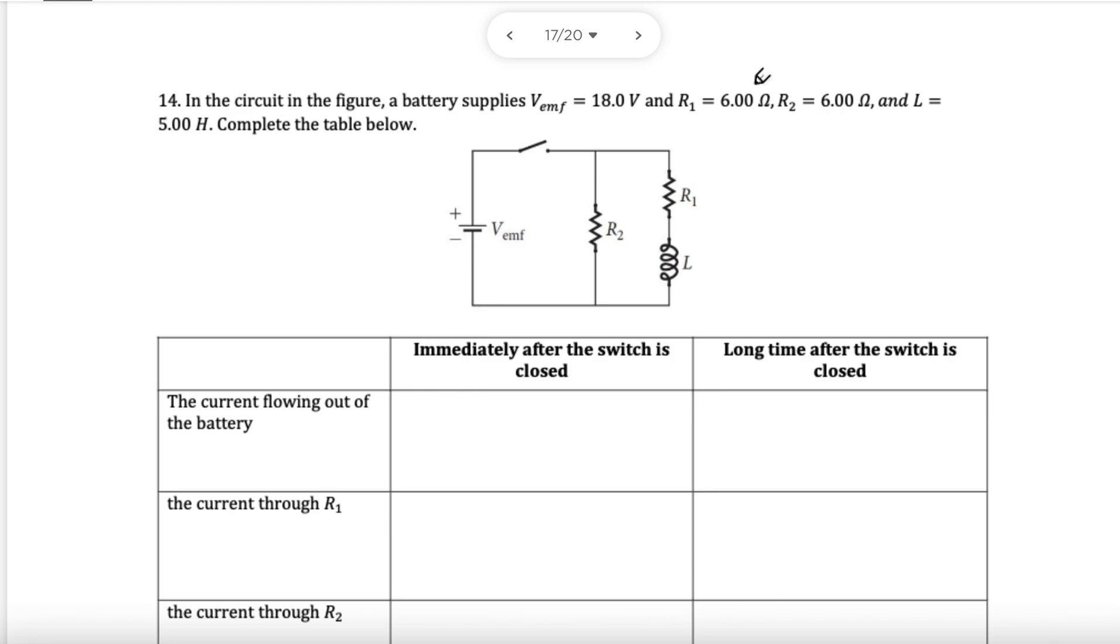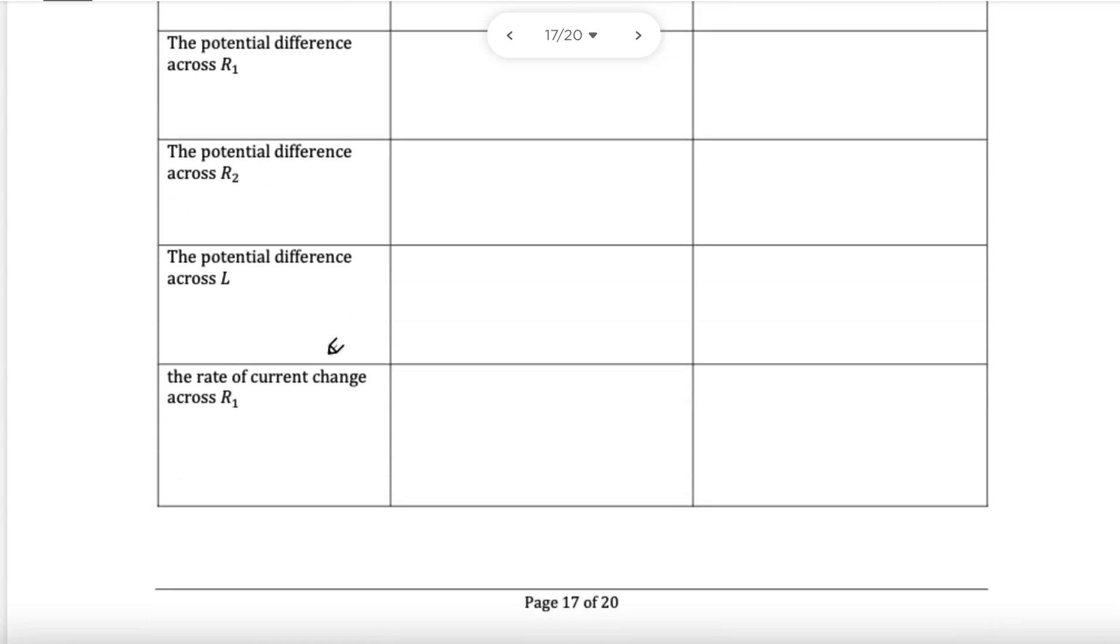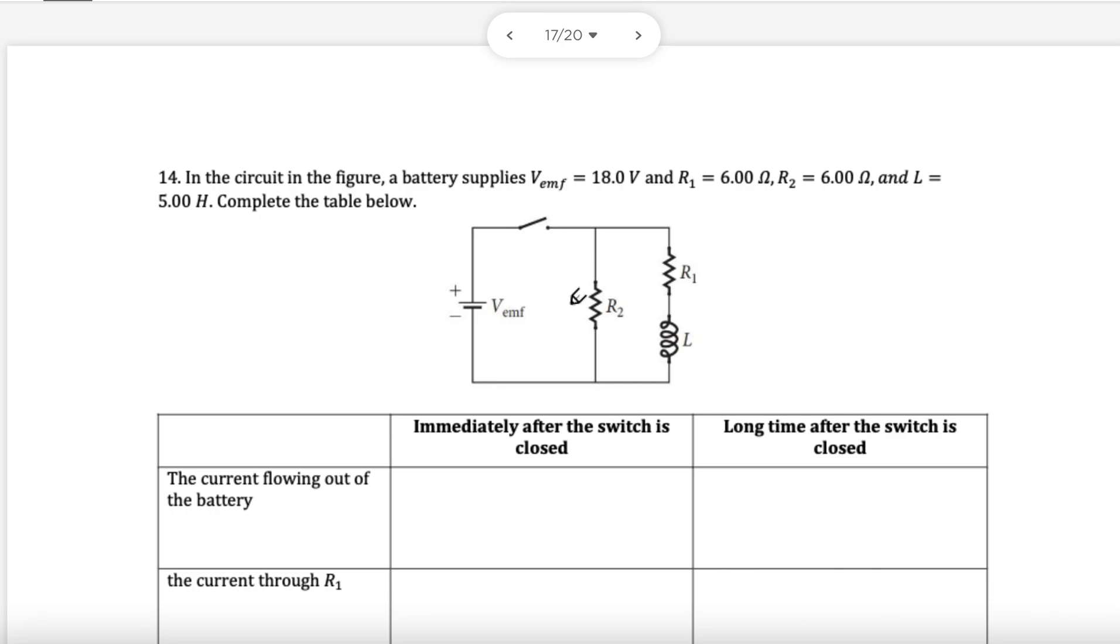Okay, so before I get on with the RL circuits and the multiple choice questions, I thought it would be best to show you this example, this table. If you can understand what's happening in this example, you're going to be a professional with RL circuits. I totally didn't get forced to do this by one of my students. So let's see if we can figure out what's happening here.